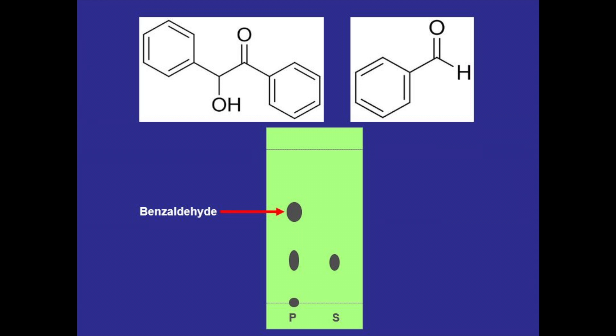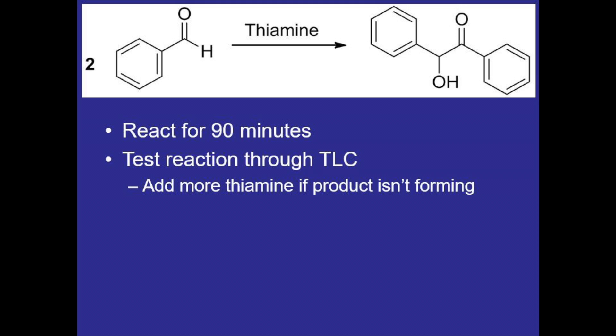If the TLC plate does end up looking like this where there is more benzaldehyde reagent than benzoin product forming then we can simply add some more thiamine and let the reaction continue.